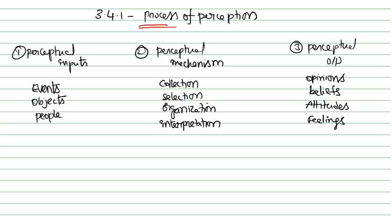The perceptual outputs which determine your behavior include feelings, attitudes, and opinions. So feelings, attitudes, and opinions are what come under perceptual outputs.